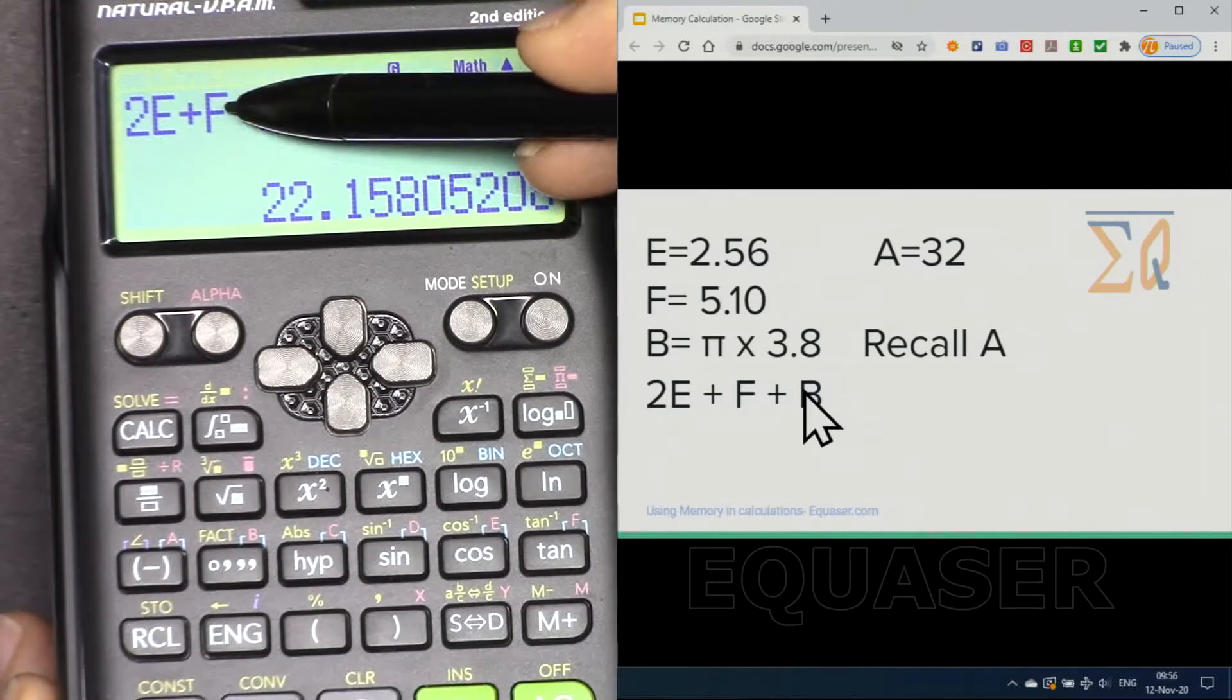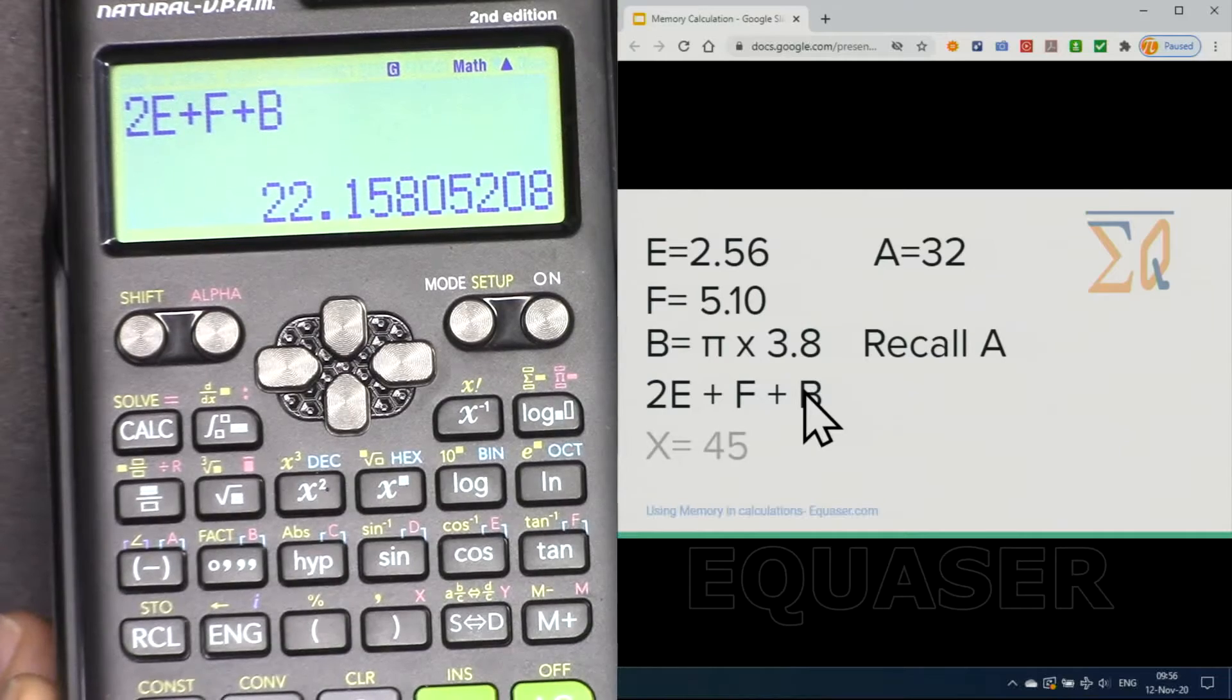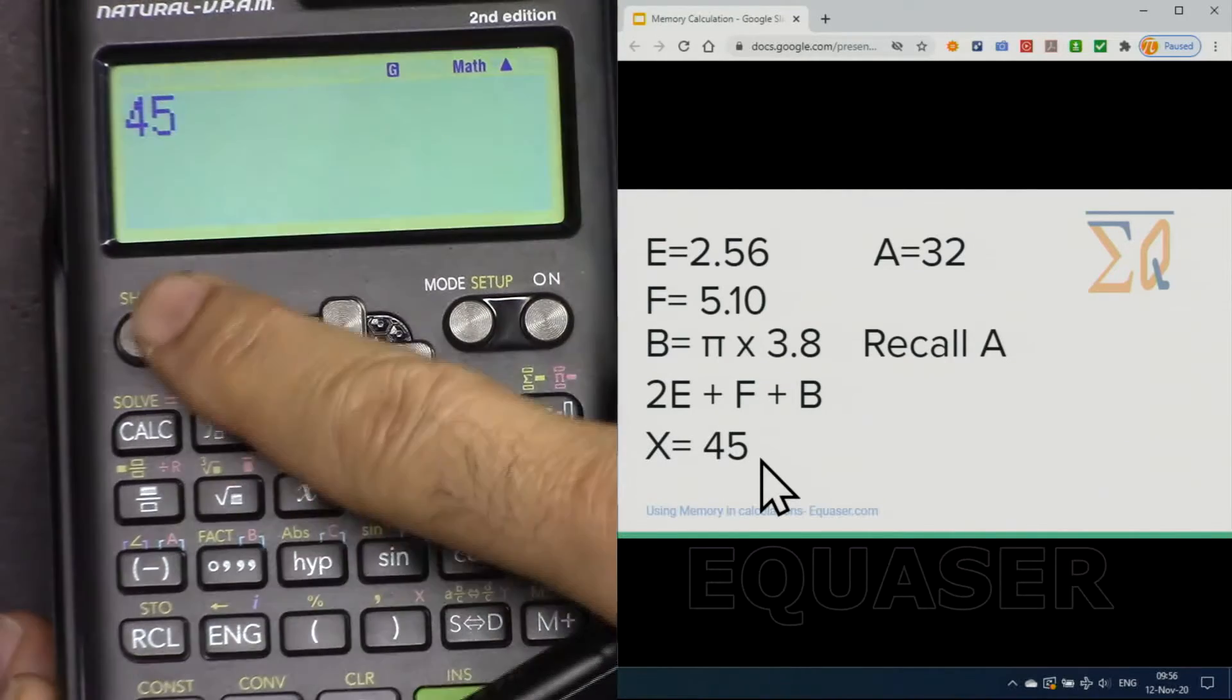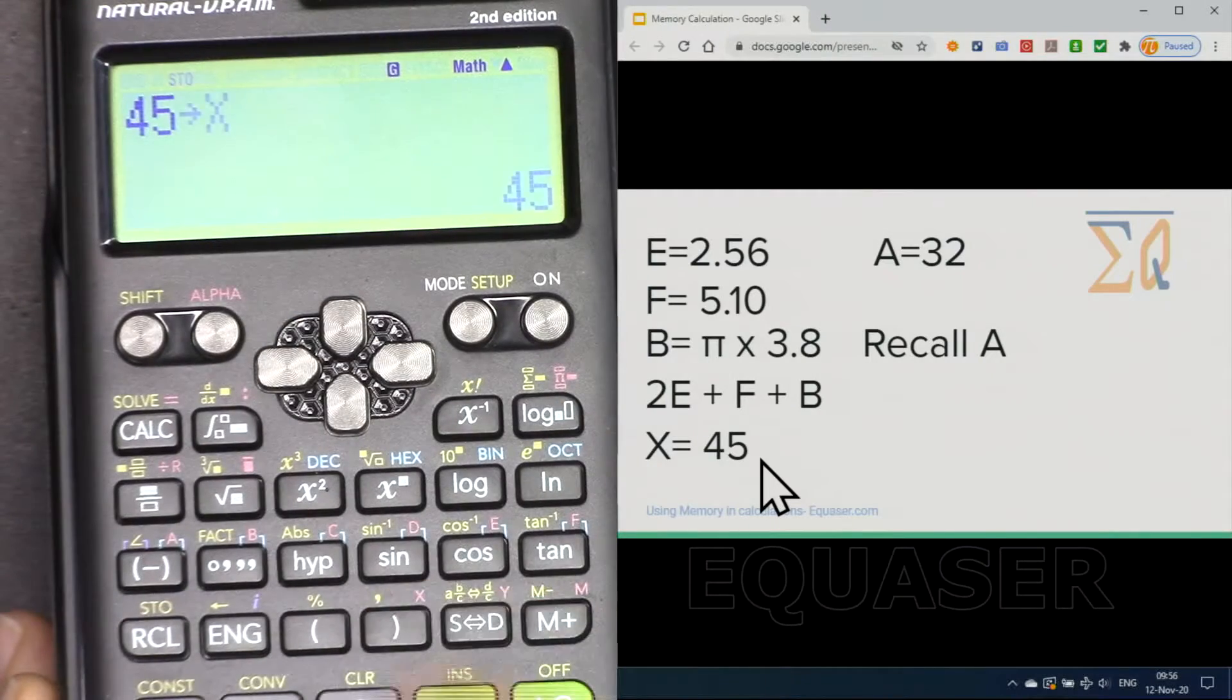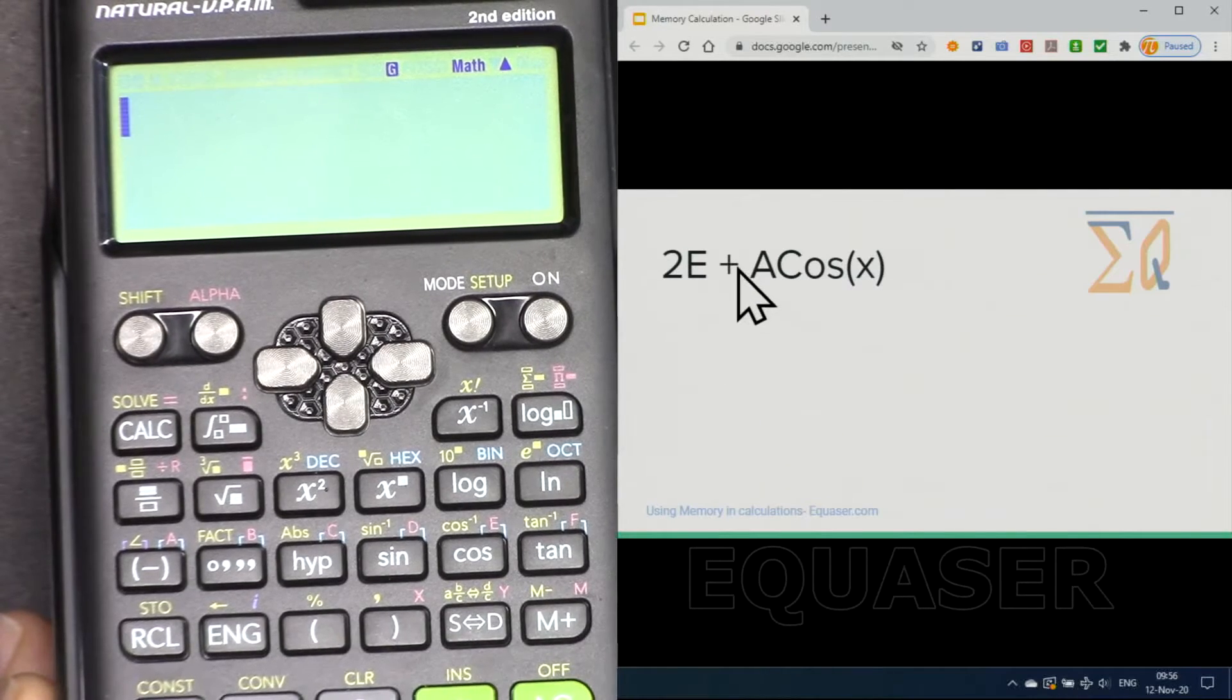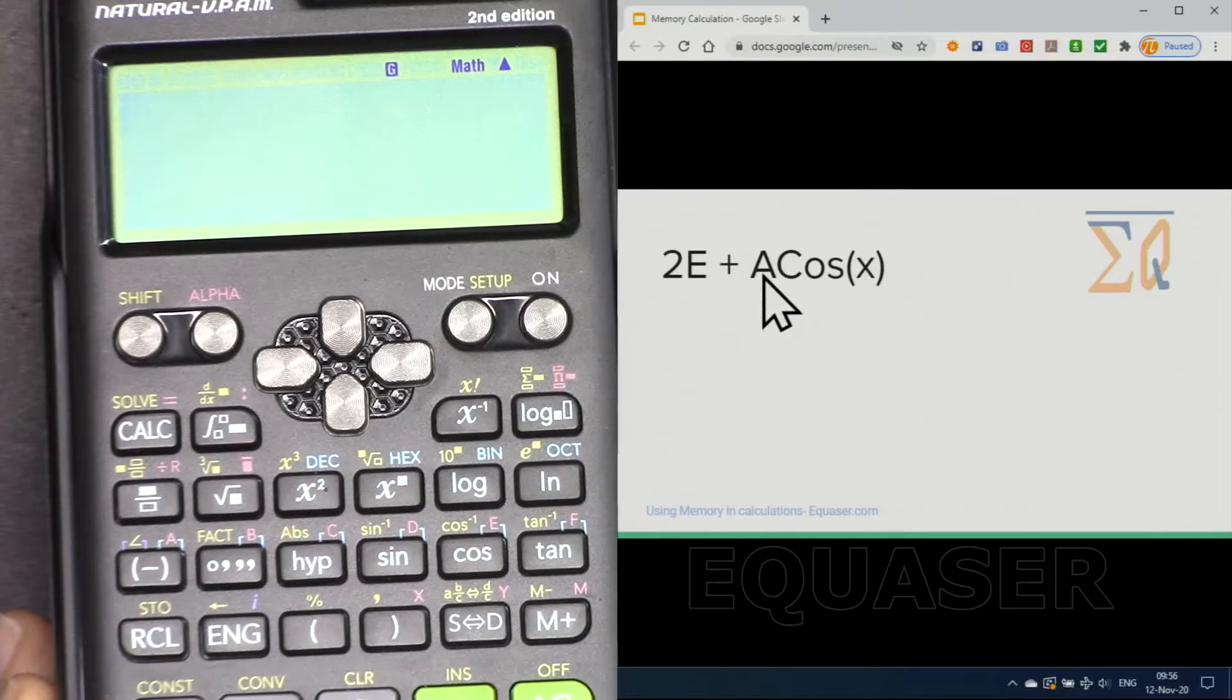Let's say 45 into X shift store and X it has been stored. And let's see you want to do 2E plus A cosine of X, so these variables will come from memory.